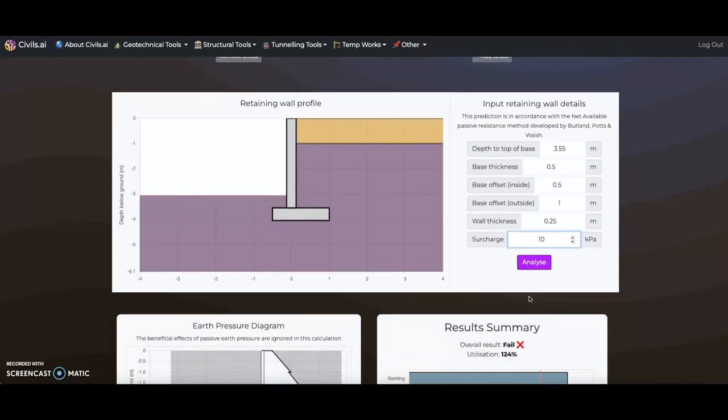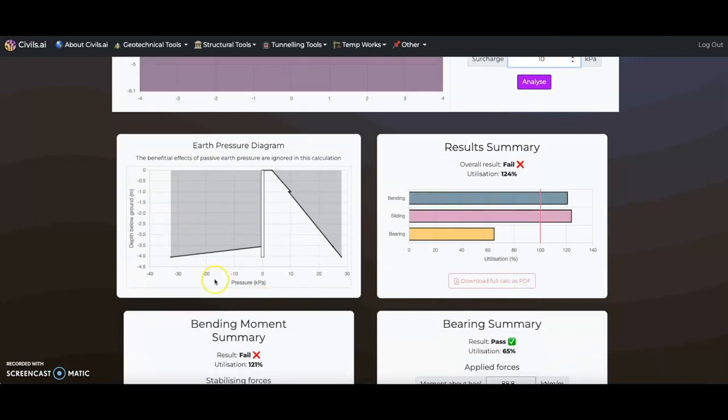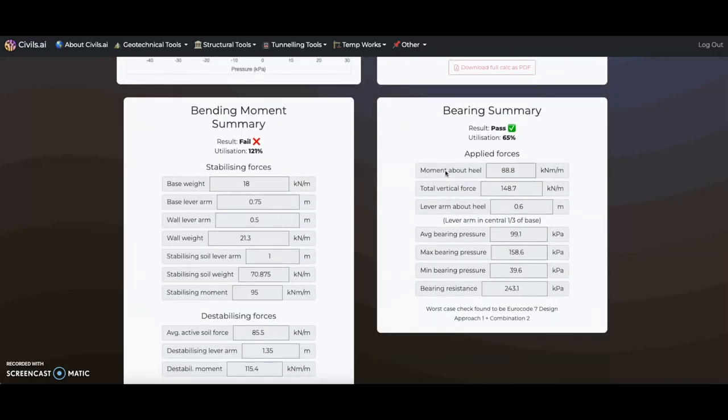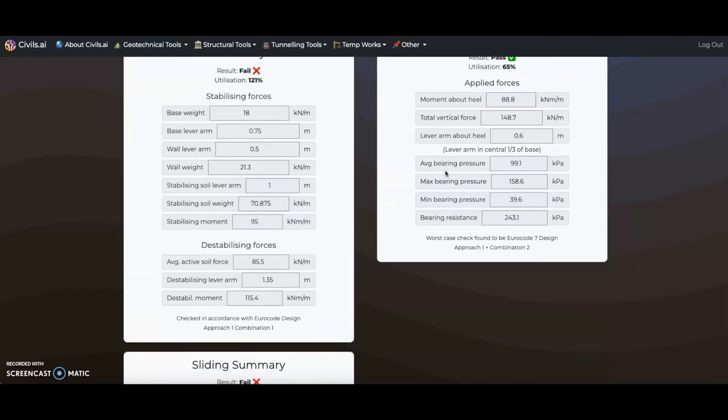Beneath this, we can see our active and passive earth pressure calculations. We can also find an estimate of the bending, sliding and bearing utilization of the wall, including an overall result. For the bending, sliding and bearing capacity of the wall, we can find a more detailed breakdown of our calculation.